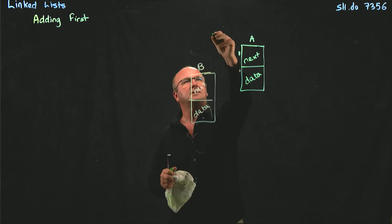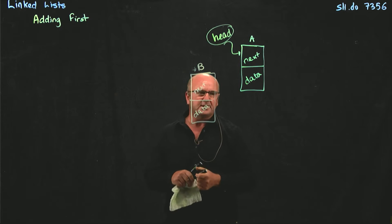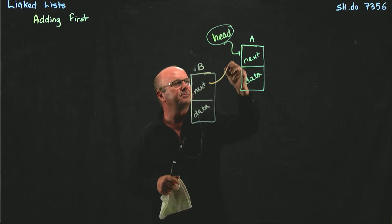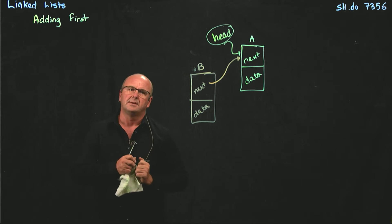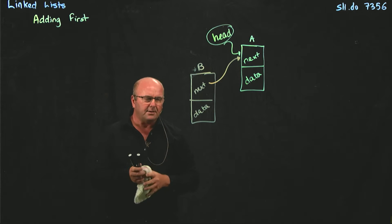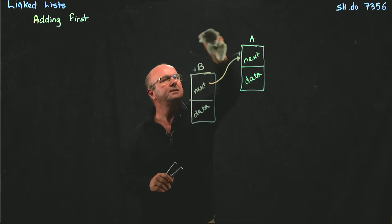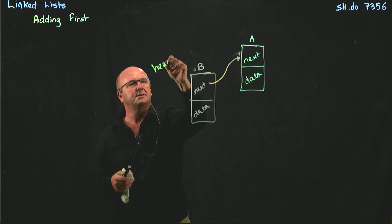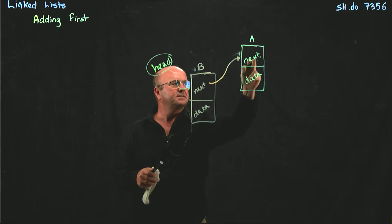So we've got our list where we've got head here pointing to A. So the first thing that we have to do is take our new node and make next also point to A. Now we can take head, we can move head, head points to B, and head.next points to A.